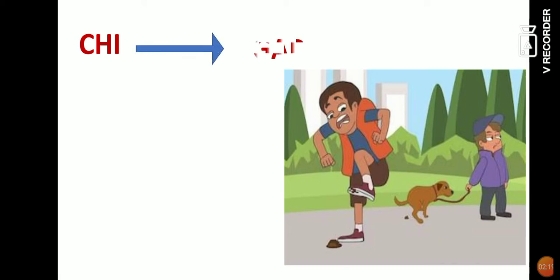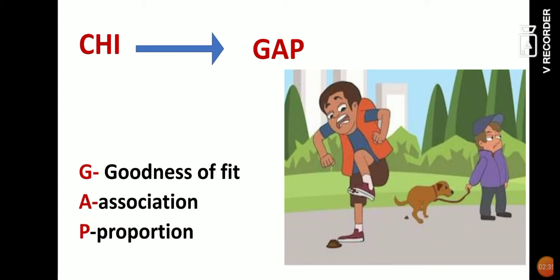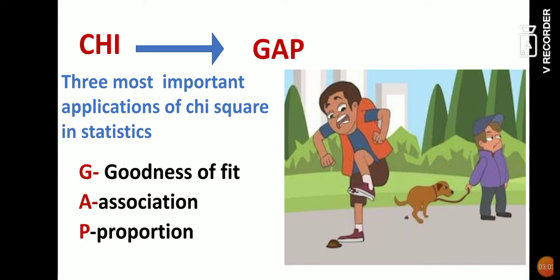From keeping distance, we get the word GAP. So from chi we derive the mnemonic GAP. The mnemonic GAP stands for: G = Goodness of fit, A = Association, P = Proportion. Proportion is a ratio comparing the relative magnitude of two quantities. Association means examining the connection or variation between two variables. Goodness of fit is where statistical and mathematical calculations are applied. These are the three most important applications of chi-square test.